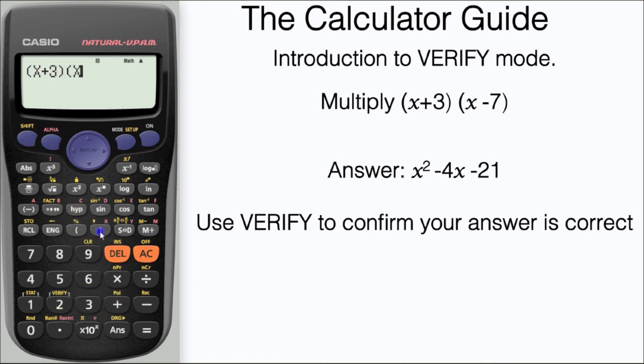I've inputted my two brackets and now I want to access the verify menu and I want 1 for equals and then I'm going to put in my expanded expression x squared minus 4x minus 21. As expected there that says true indicating that we've got the correct expansion.